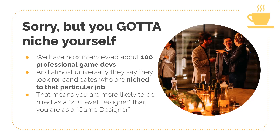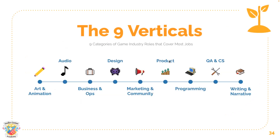You should not be just an engineer — you should instead be an AI engineer or something similar. These are the nine verticals: art and animation, audio, business and ops, design, marketing and community, product, programming, QA and CS, and writing and narrative. These nine game professions cover the vast majority of game development jobs. The only reason I ask if you don't know which one you are is because if you don't know, there's no way you're going to make a portfolio. So your first step is to figure out which one you are.